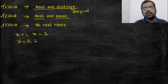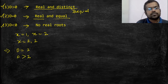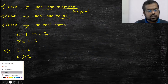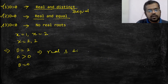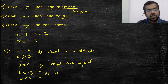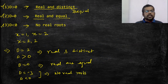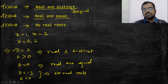जैसे d की value 2 आ गई तो d > 0 — roots are real and distinct। D = 0 आ गया तो roots are real and equal। D = -3 आ गया मतलब d < 0 — no real roots, real roots होंगे ही नहीं। यह conditions याद होनी चाहिए।